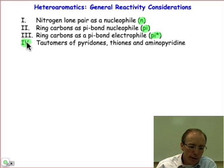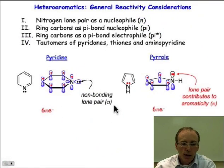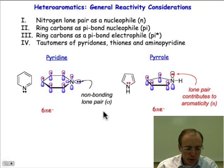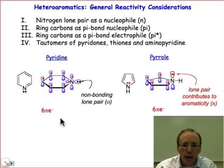To begin, let's take a comparison between the 5 and the 6-membered rings of pyridine and pyrrole. And let's try to break it down in terms of what we might expect to see for the different kinds of reactivity based on the nitrogen lone pair or the π system.